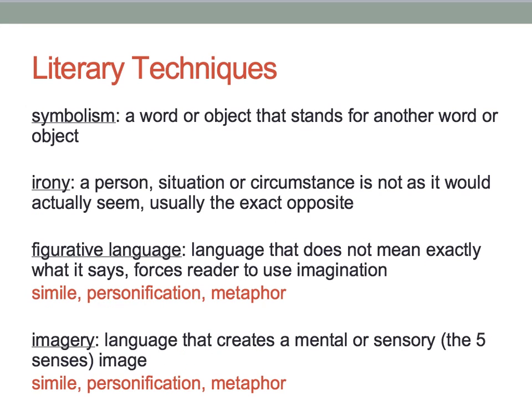Next, I'd like to quickly review some literary techniques. Literary techniques are often used in poetry, but not limited to poetry. The first is symbolism — symbolism is when a word or object stands for another word or object, like the color red often resembles passion. Next is irony — irony is when a person's situation or circumstance is not as it would actually seem; in fact, usually the opposite is happening. Next is figurative language — figurative language is language that is imprecise; it does not mean exactly what it says. For example, if I say 'school is a fashion show,' I have used a metaphor and imprecise language to put a picture in your head.